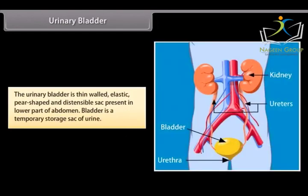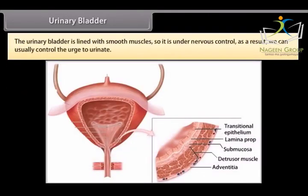The urinary bladder is a thin-walled, elastic, pear-shaped, and distensible sac present in the lower part of the abdomen. The urinary bladder is a temporary storage sac for urine. It is lined with smooth muscles, so it is under nervous control. As a result, we can usually control the urge to urinate.